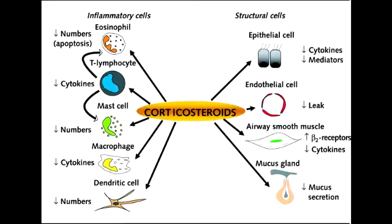What is the mechanism of action of beclomethasone and fluticasone? The mechanism of action of these corticosteroids in asthma is to inhibit the synthesis of virtually all cytokines. These drugs also inhibit nuclear factor kappa light chain enhancer of activated B cells, which is the transcription factor that induces the production of TNF-alpha. So basically these drugs inhibit the production of TNF-alpha as well as some other inflammatory agents.